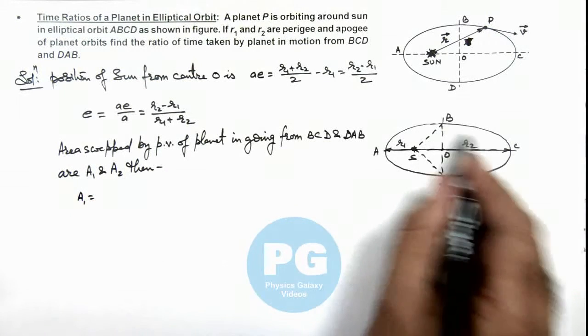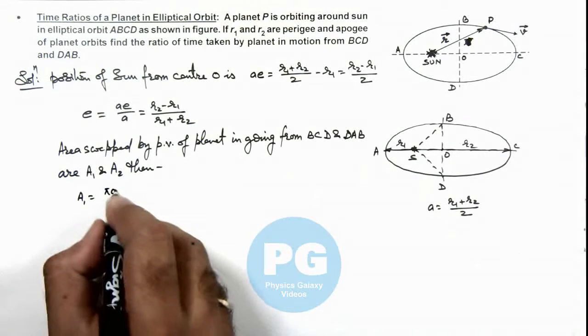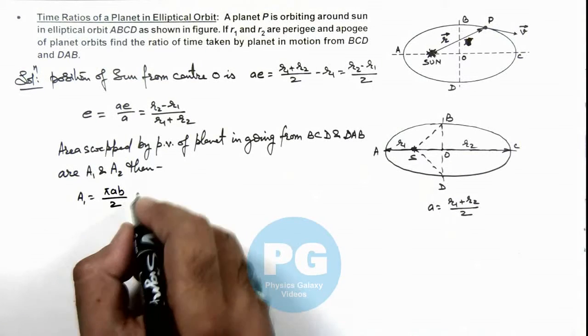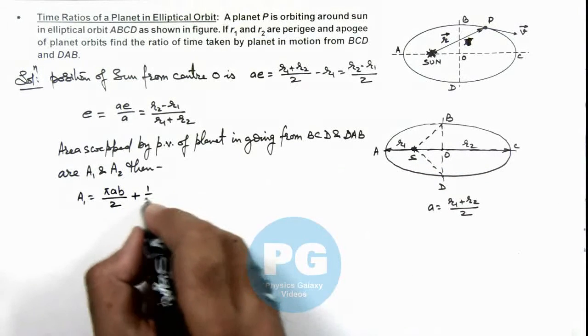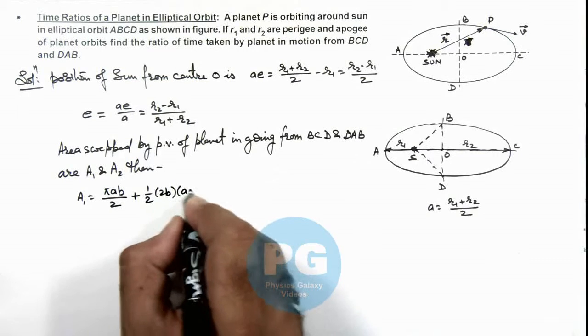Is πab by 2, if b is the minor axis, plus we add the area of this triangle, which is half multiplied by 2b multiplied by ae.